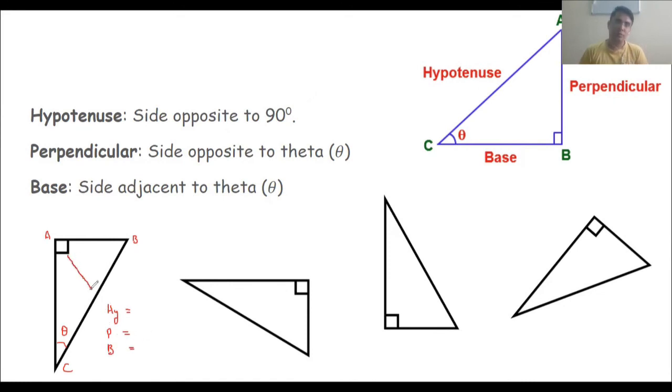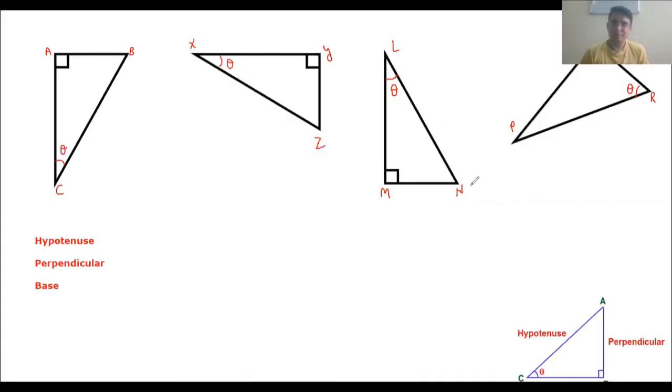In this case, think about it. Hypotenuse is opposite to 90 degrees, which is DC, so we'll write DC. Perpendicular is opposite to theta, or I would say opposite to the given angle, so AB. And the remaining side AC is the base. Let me just write a few parts like these three parts and you do it for me. These are three questions which you can do. You can form a table of this sort, and this is a reference which I have shown so you can write down your answer.